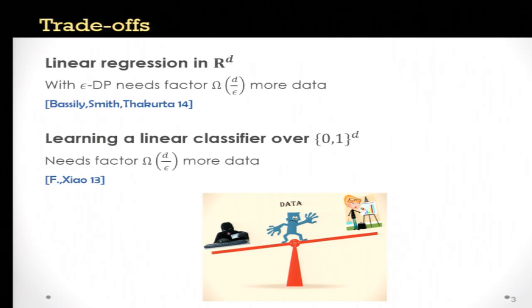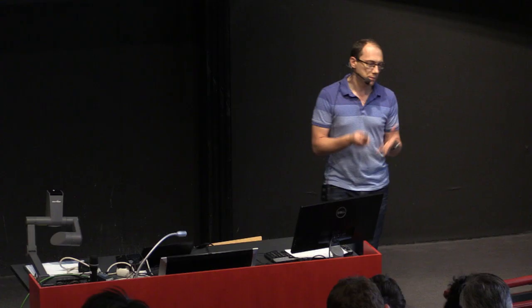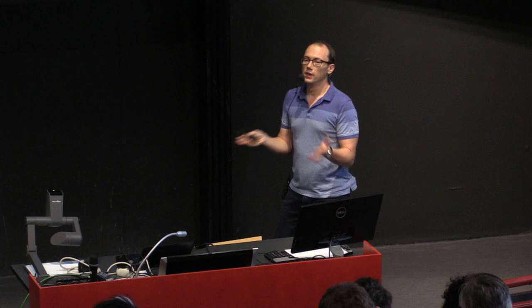The basic insight on which this work is based is that in most cases, the end users of these learning systems only care about predictions on their specific data points. For example, if I want to know my risk of having diabetes, I only care what the risk is for me, and I don't care about how exactly the model has been derived.